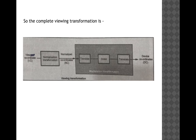In summary, the complete viewing transformation works as follows: we start with view coordinates in the world coordinate system, convert world coordinates to viewing coordinates, then apply normalization transformation to account for different pixel sizes and resolutions across display devices. The normalized coordinates are then converted to device coordinates through the workstation transformation — translating to the origin, scaling, and translating back — ultimately producing the device coordinates that are displayed on the screen.